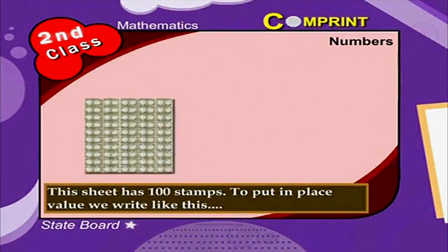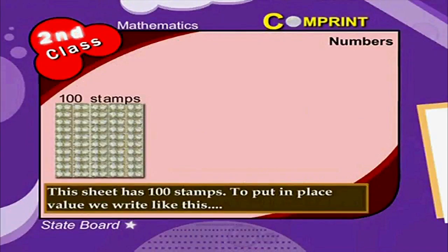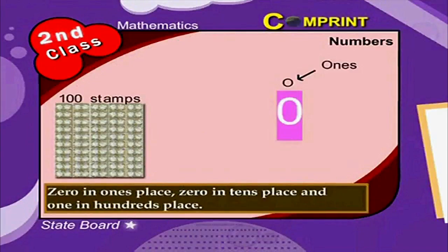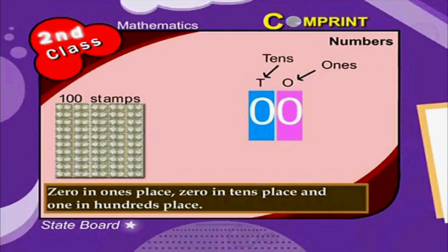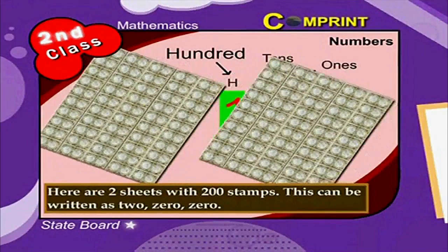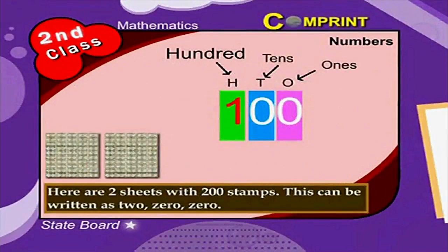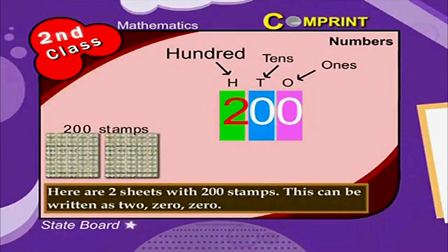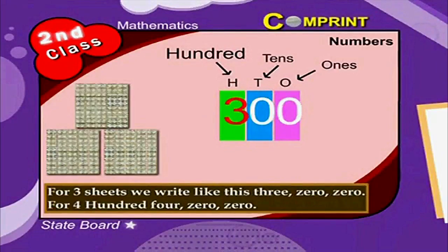This sheet has 100 stamps. To write it in place values, we write zero in ones place, zero in tens place, and one in hundreds place. Here are two sheets with 200 stamps. This can be written as two zero zero.